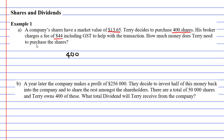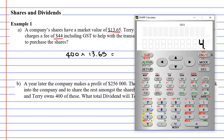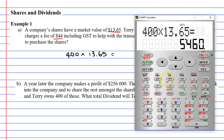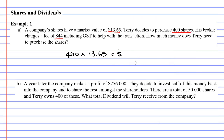If he's buying 400 of them at $13.65, we just multiply them together. 400 times $13.65, and we get $5,460, which he's going to pay for the shares. He also has to pay his broker, so we need to add this amount to the $44 that he pays the broker, which will take us to $5,504.